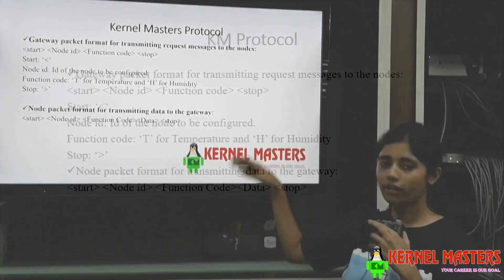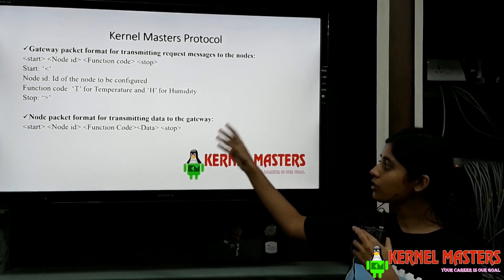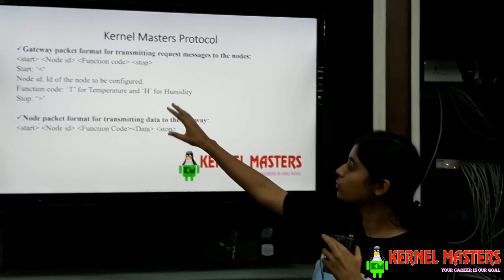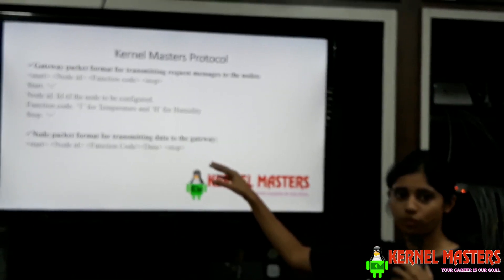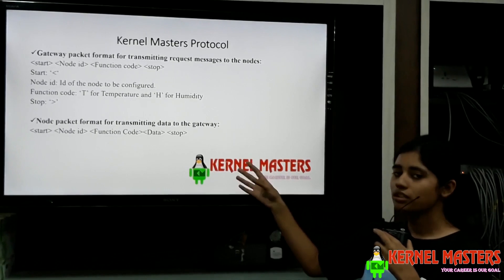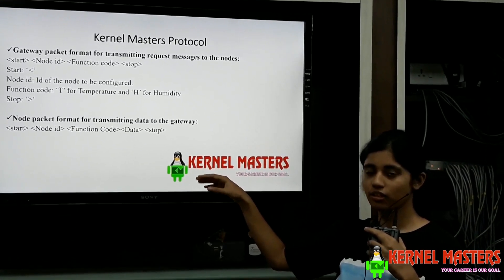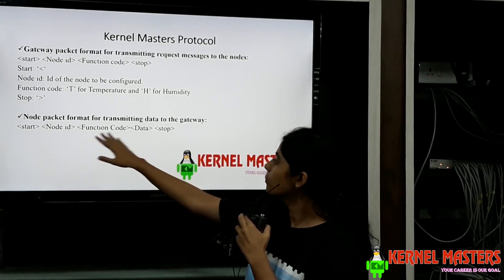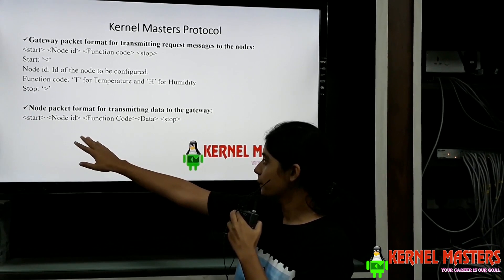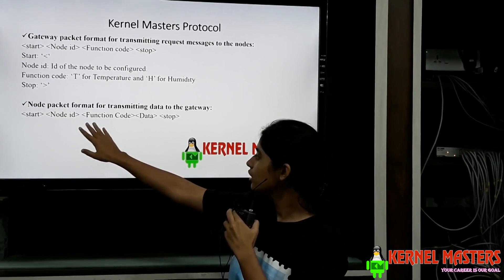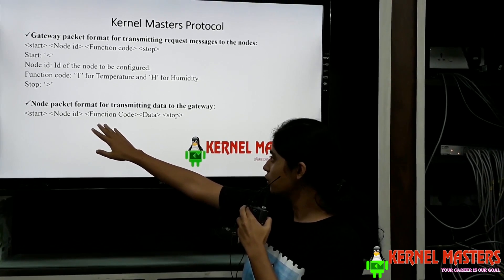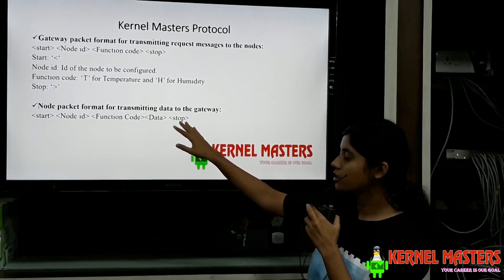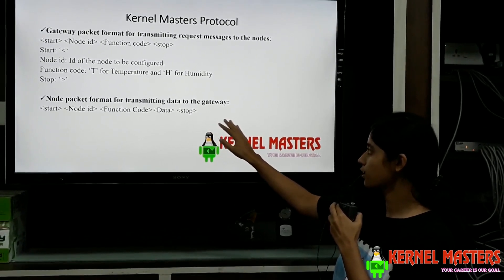The gateway sends this packet to the node, and the node on receiving it checks the corresponding node ID and the function code. Suppose it receives T — it calculates the temperature from the DHT sensor, and then sends the following packet back to the gateway: first the start signal, then the ID of its own, then the function code (T for temperature, H for humidity), then the data — that is the temperature and humidity values — and then the stop signal.